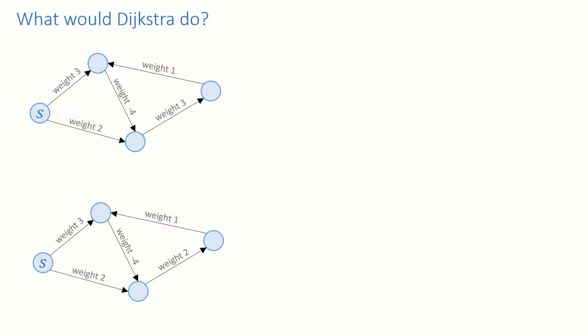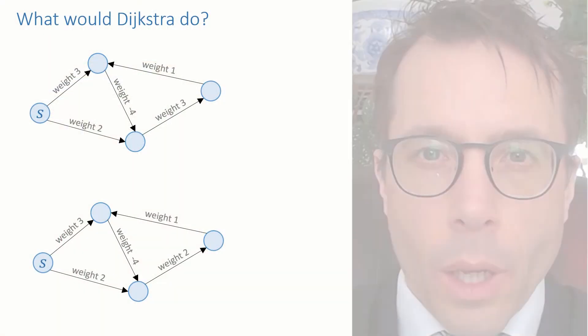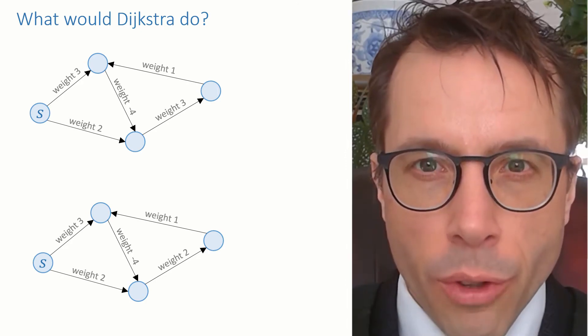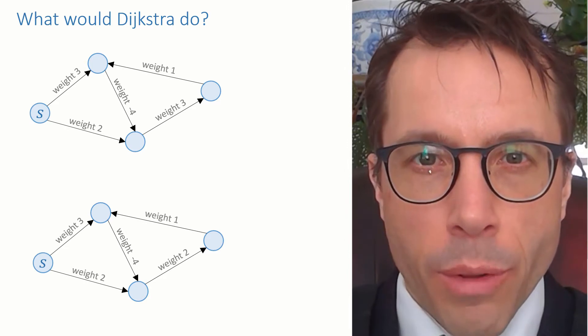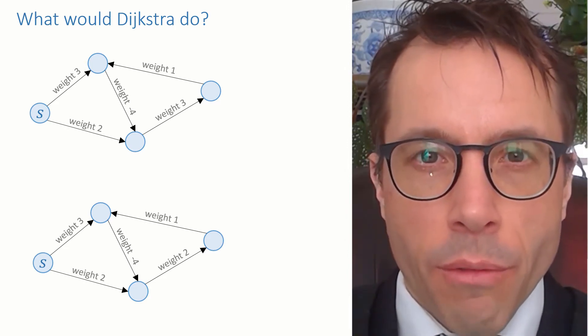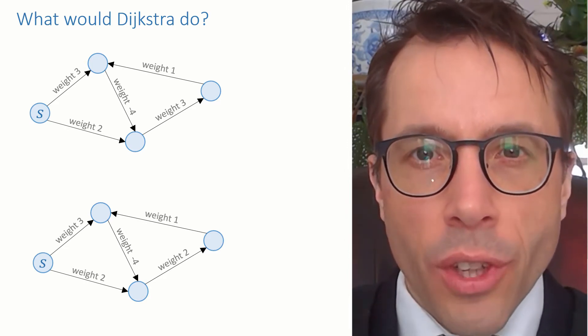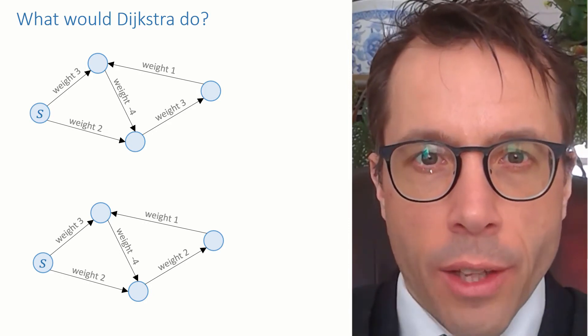Actually, the first thing we should do is ask ourselves what Dijkstra's algorithm would do. What would happen if we just went ahead and ran Dijkstra's algorithm on a graph with negative costs? Here are two graphs. What I'd like you to do now is pause the video and work through Dijkstra's algorithm step by step on them with pen and paper. Start from the vertex labelled s and see what effect the negative weight edge has.